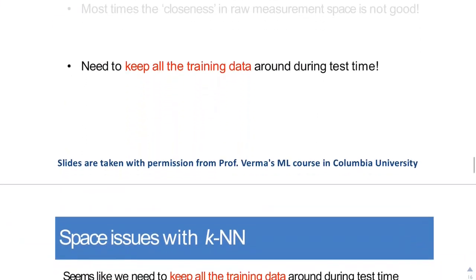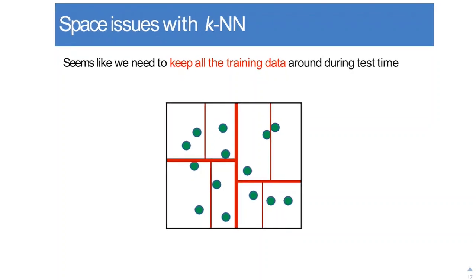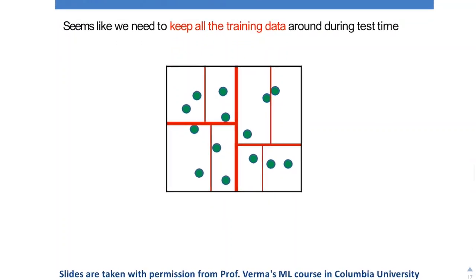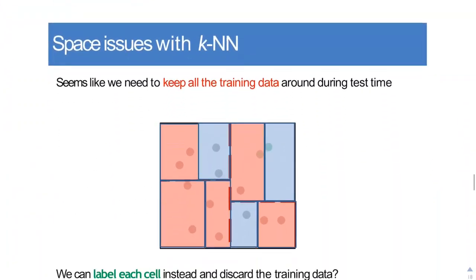In KNN, we need to keep all the training data around during test time. Why? Because after navigating to a particular region, we ultimately need to compute the distance of the test point with the data points in that region. So we need the training data. But the question is, can we do without it?